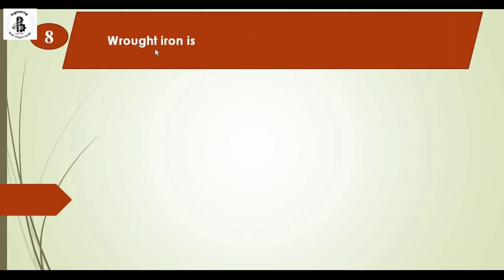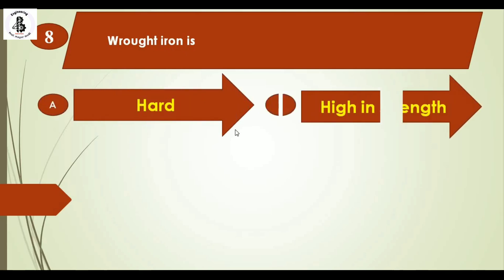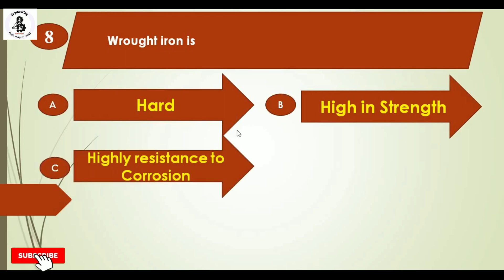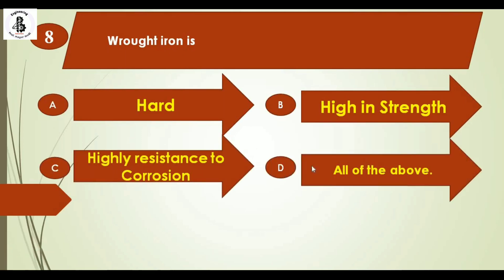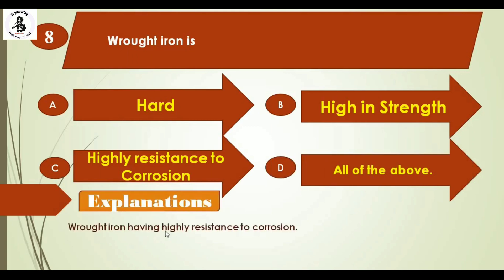Wrought iron is: option A hard, option B high in strength, option C high resistance to corrosion, and option D all of the above. Wrought iron has a high resistance to corrosion. The right answer is option C.